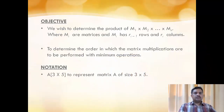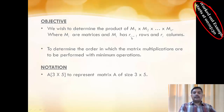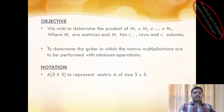Let us see its objective. We are given with few matrices M1, M2, M3 up to Mn, where Mi is a matrix and Mi has Ri-1 number of rows and Ri number of columns. We have to determine in what order we need to perform the matrix multiplication so that the minimum number of operations will be required.